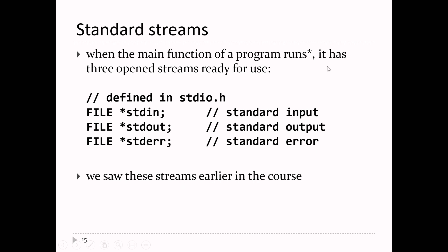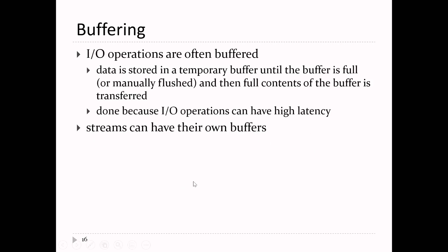When your main function runs, it has three open streams ready to use — standard in, standard out, and standard error — the same as we talked about in bash. In C, these three streams are defined for you automatically from the header file stdio.h. I/O operations are often buffered, meaning data is stored internally in an array. When the buffer is full or flushed, the contents are transferred. Streams may have their own buffers, so when you write to a file, the contents may not be updated immediately.